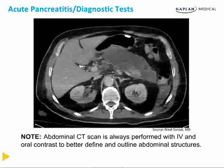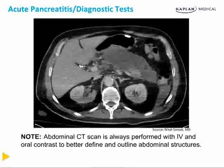Here's a classic abdominal CT scan performed with IV and oral contrast to better define and outline the abdominal structures. Note the inflammation around the area of the pancreas.